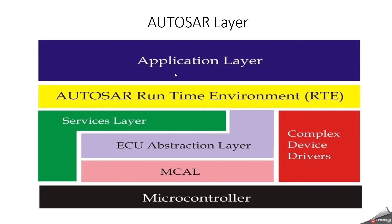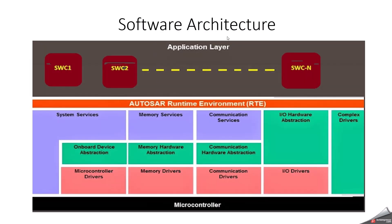First, let's discuss about the AutoSAR layer. AutoSAR is a layered architecture. It has three layers: one is the application layer, another one is RTE, and another one is the base software layer. Inside the base software, we have three more layers: one is the service layer, ECU abstraction layer, and MCAL — microcontroller abstraction layer. This is the software architecture of AutoSAR.